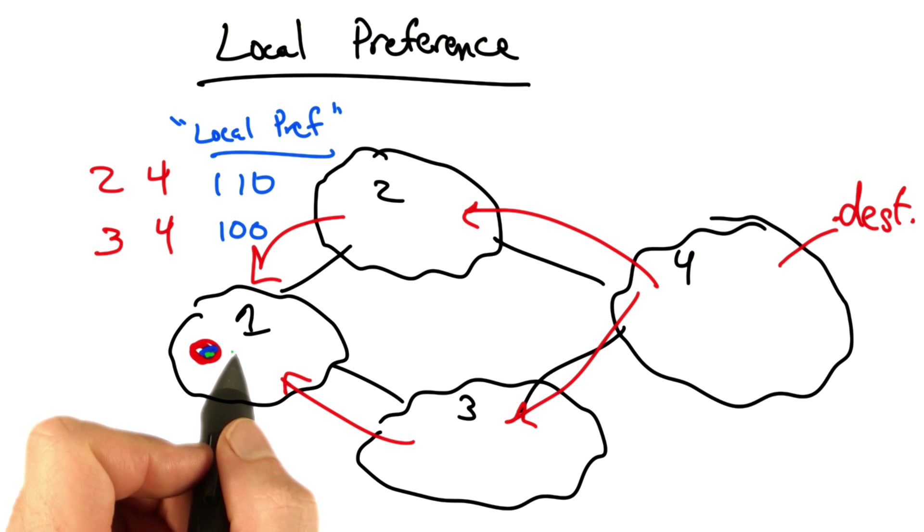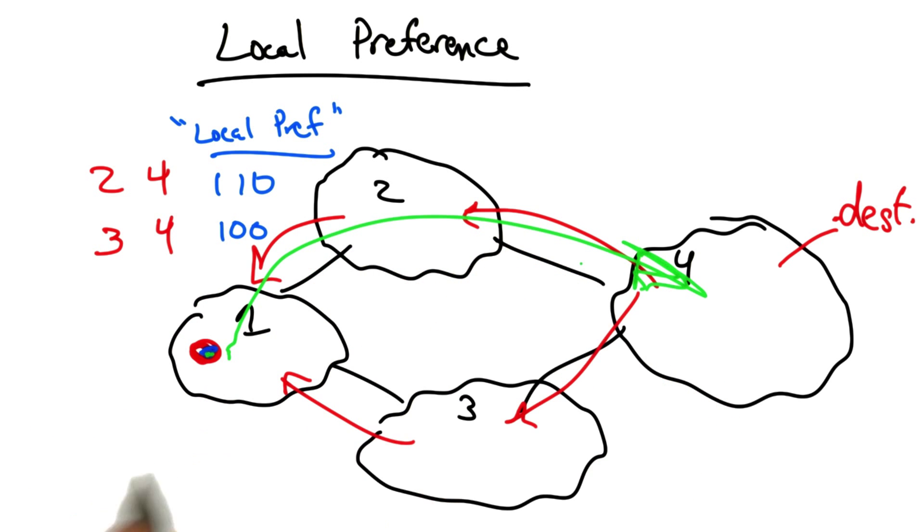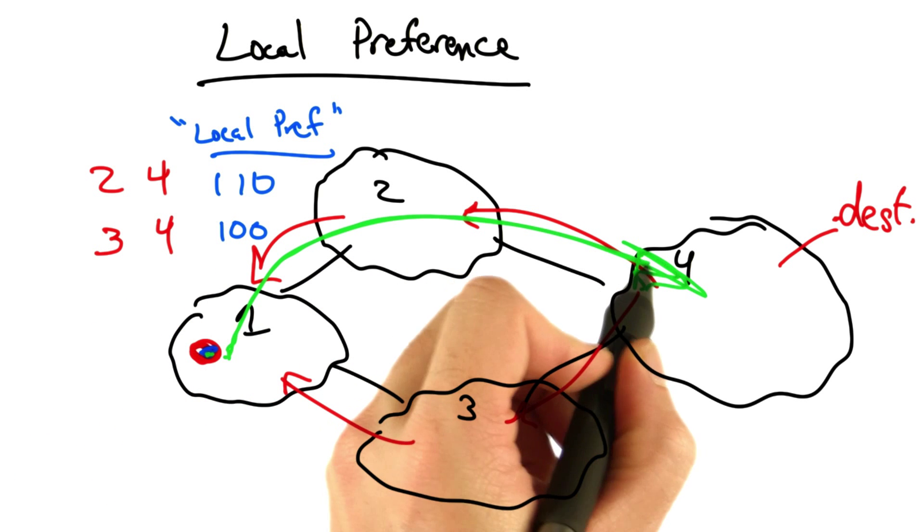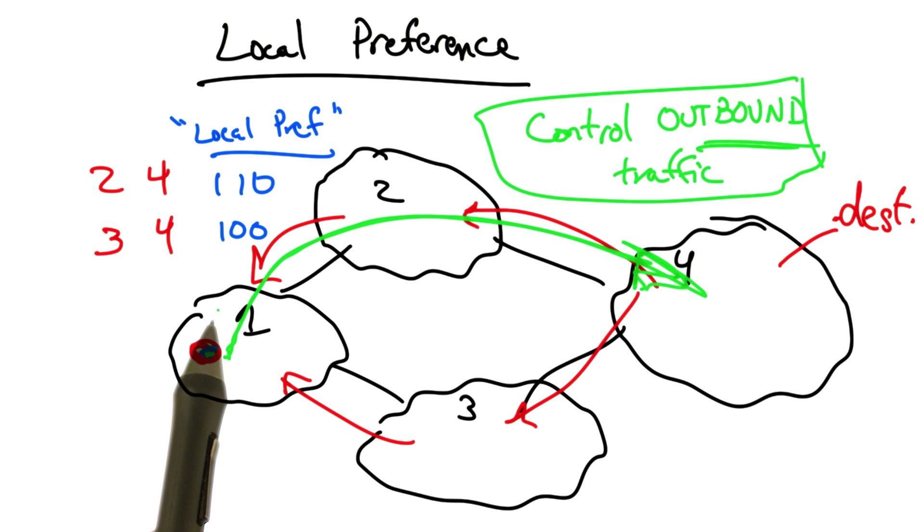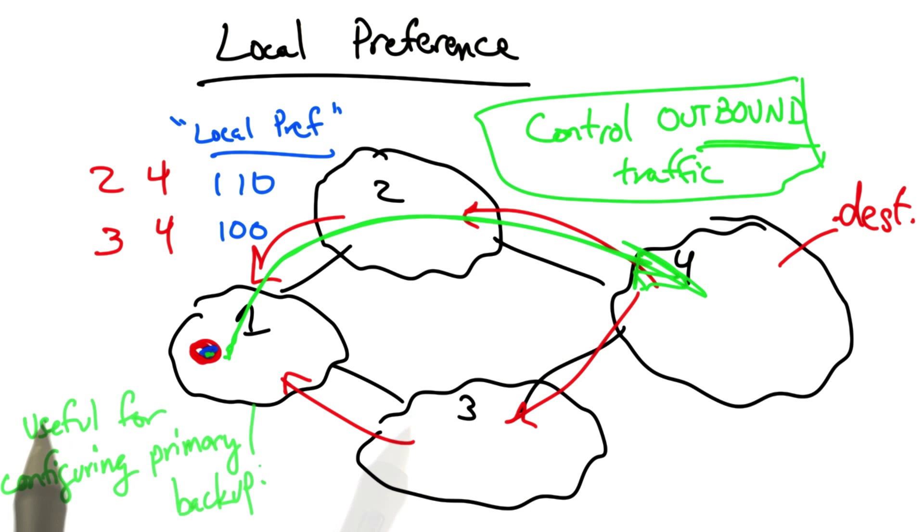This results in this router selecting the route through AS2 and sending traffic to the destination in AS4 via AS2. In this way, an operator can adjust local preference values on incoming routes to control outbound traffic, or to control how traffic leaves its autonomous system en route to a destination. This is extremely useful for configuring primary and backup routes.